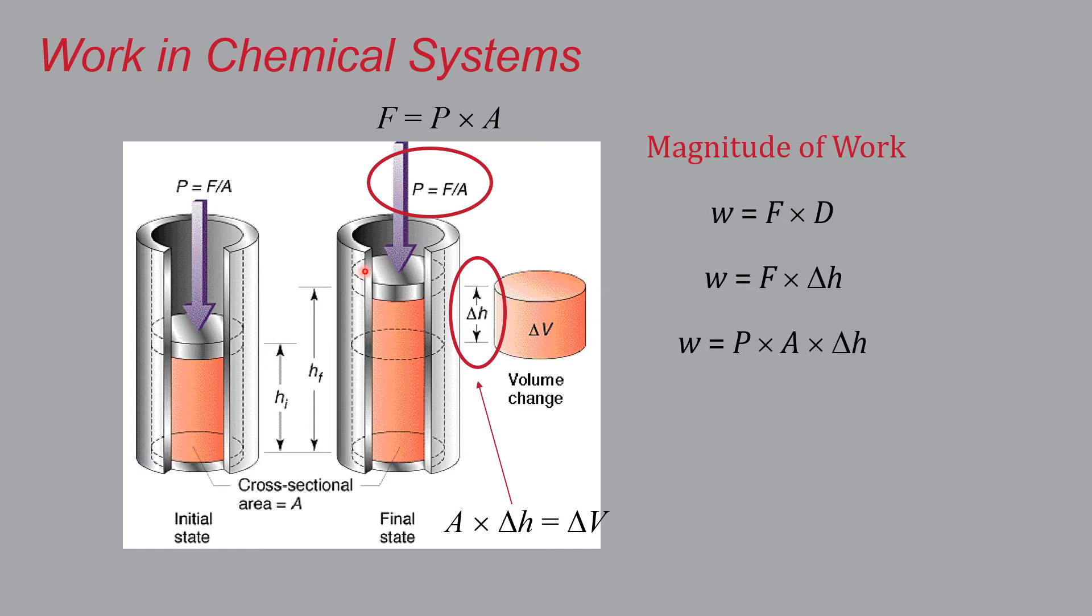Now the area, which is the cross-sectional area which doesn't change, times the change in height is actually equal to the change in volume. So I'm going to substitute that into this equation right here. And that gives us the notion that the work is equal to the pressure times the overall change in volume of our piston here.